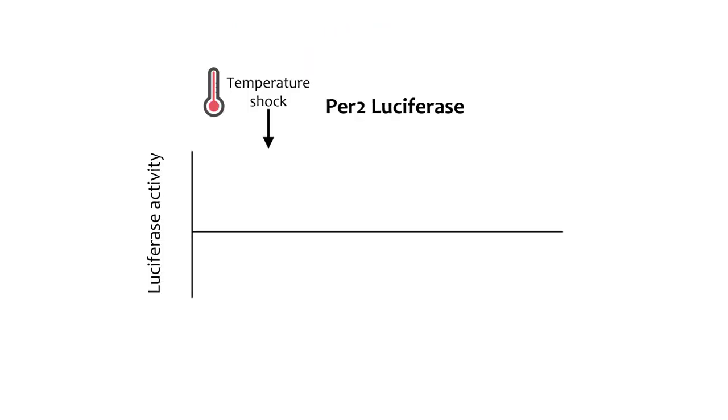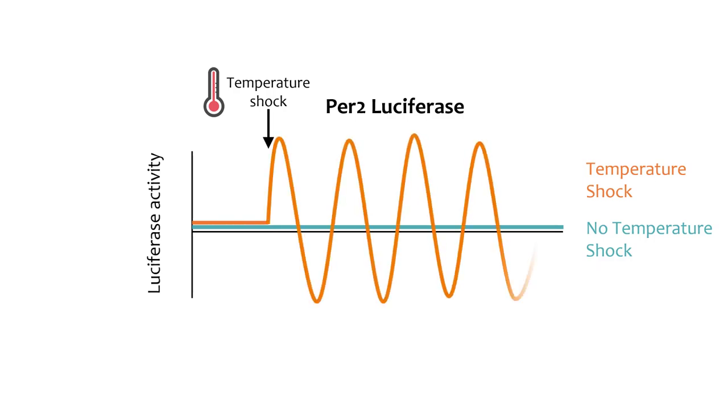Researchers wanted to study if a temperature change is a potential mechanism through which the SCN entrains peripheral oscillators. One experiment studied the effects of temperature using the PER2 luciferase mice we discussed before. The incubation temperature for fibroblasts was raised 6 degrees Celsius for 30 minutes. In response to this temperature shock, the cells became synchronized and showed a PER2 rhythm.